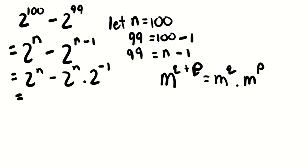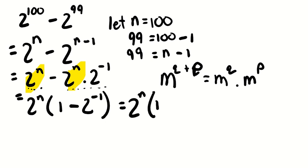Now, let's take a common factor. On the left, there is 2 to the power of n. On the right, there is also 2 to the power of n. So let's take out 2 to the power of n, and leave 1 minus 2 to the power of negative 1. So basically, what we will end up with is something like this, 1 minus 1 over 2. Because 2 to the power of negative 1 is 1 over 2.